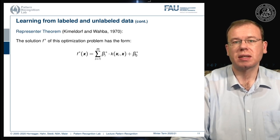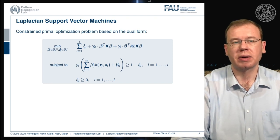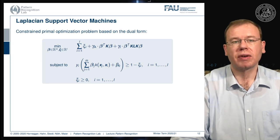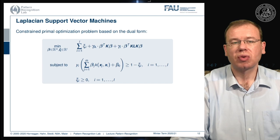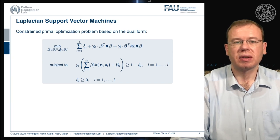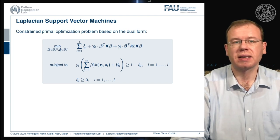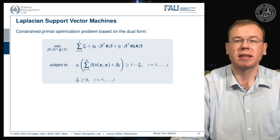With these observations, we can rewrite our constrained optimization problem as the primal optimization problem. We want to minimize our slack variables xi as well as our parameters beta with respect to the kernel space and the kernel space mapped onto the graph Laplacian. This must also fulfill constraints: the decision boundary still maps all labeled points onto the correct side — a formulation very similar to the classical SVM constraints — and all xi must be greater than or equal to zero.